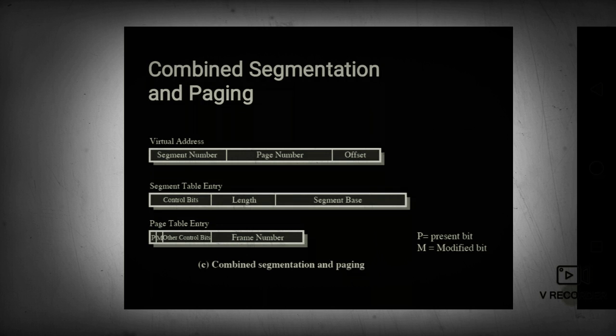We have a relocation technique also. One solution for external fragmentation is compaction. This compaction involves shifting a program in memory without the program noticing the change. This consideration requires that logical addresses be relocated dynamically at execution time. If addresses are relocated only at load time, we cannot compact the storage.